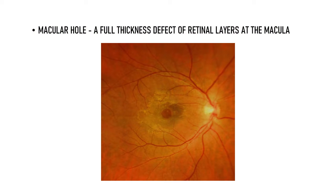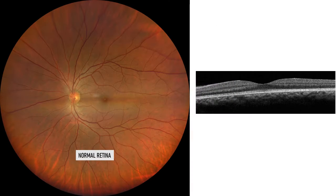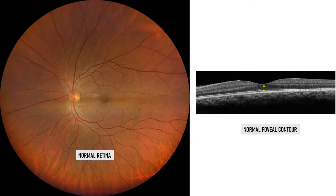Macular hole is defined as a full thickness defect of the retinal layers at the macula. Let's see this image. This is a normal retina with a normal foveal contour on OCT. All the retinal layers in the region of the fovea are intact.